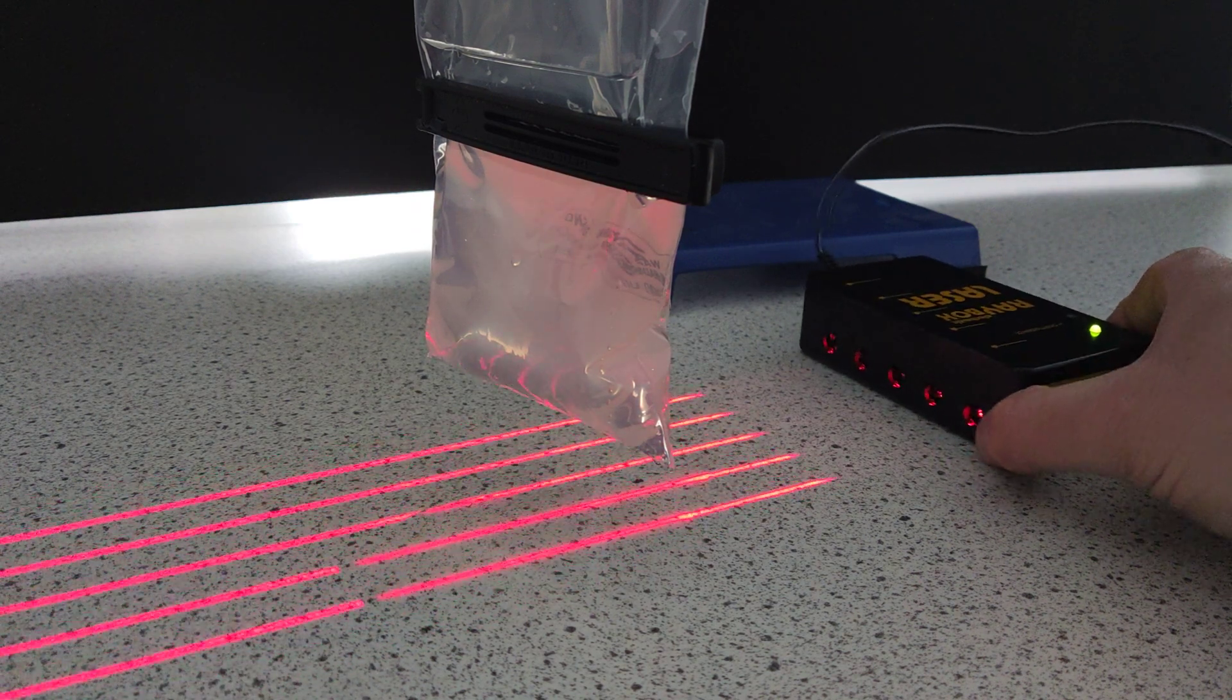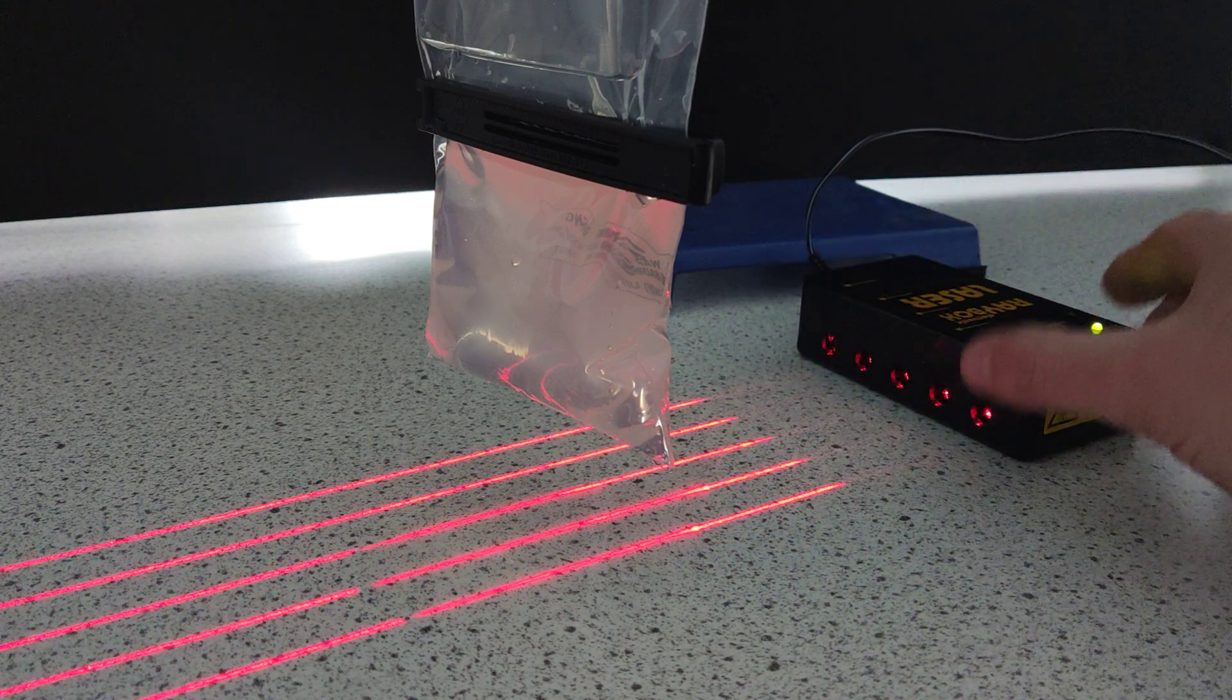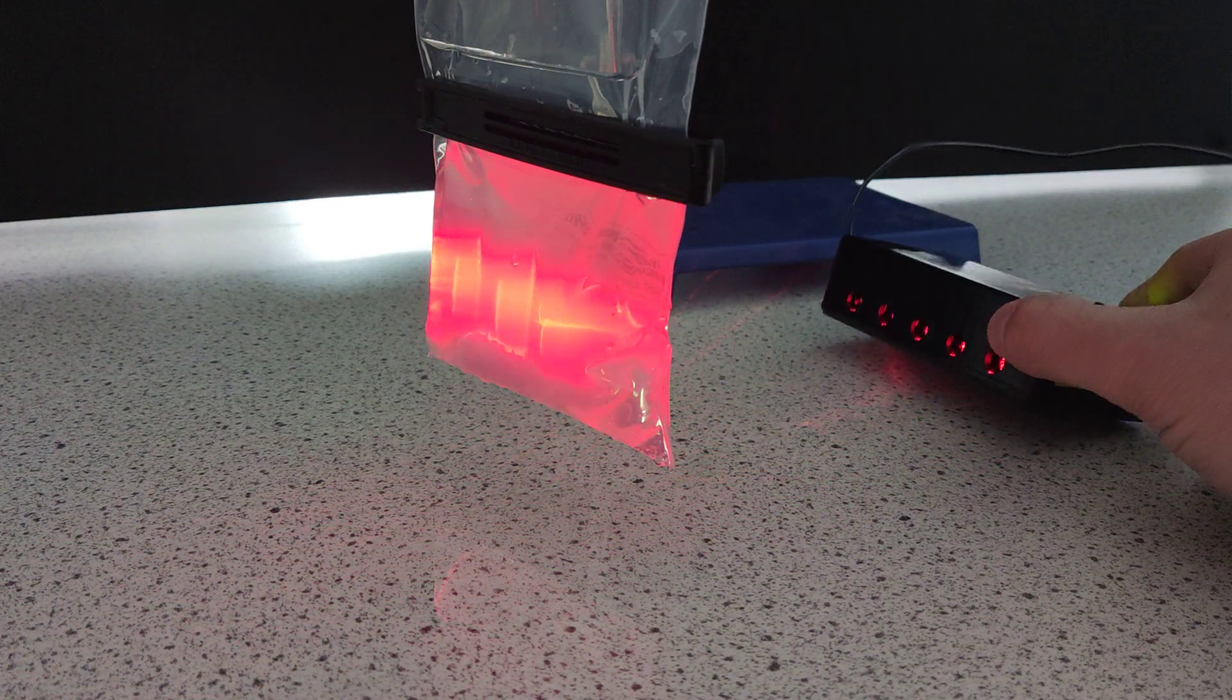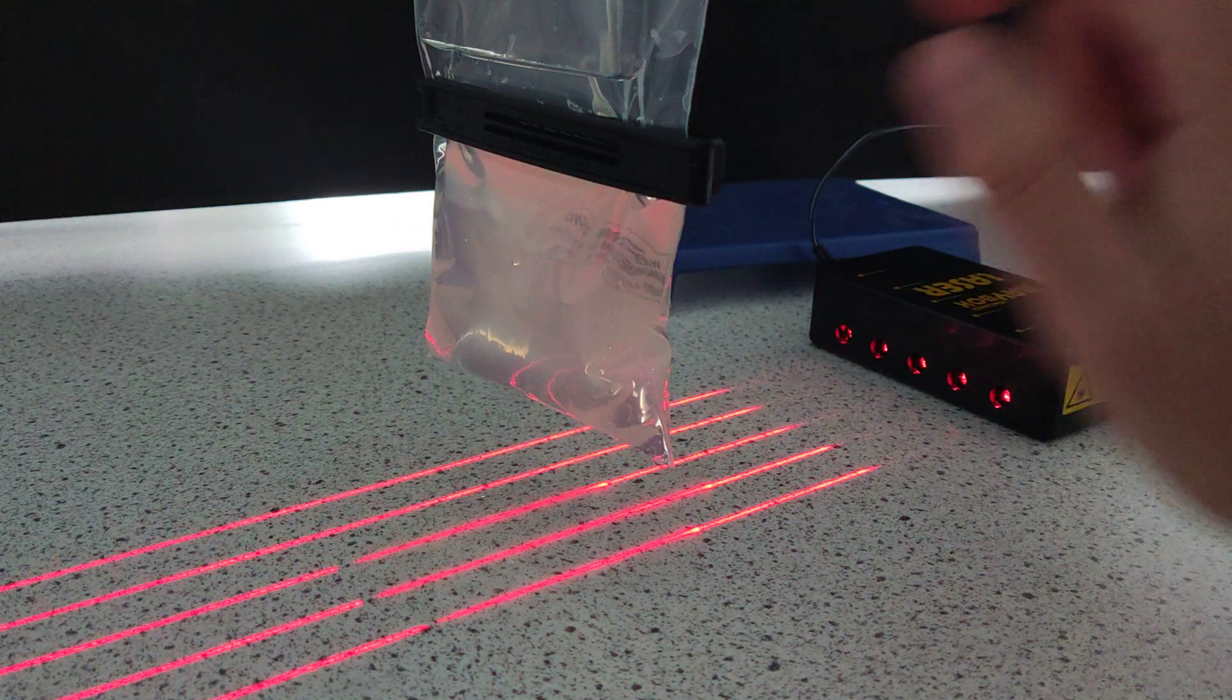So I've got a Raybox, it's got all these really cool lines but actually they're not just like dots, they're actually kind of flat lines which is kind of clever and I can do something cool with what I've got here.